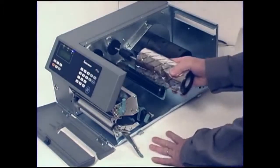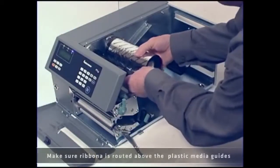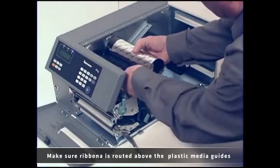Press the ribbon roll onto the ribbon supply bobbin and route the ribbon through the printer unit. Pull out 20 cm, 8 inches of ribbon.